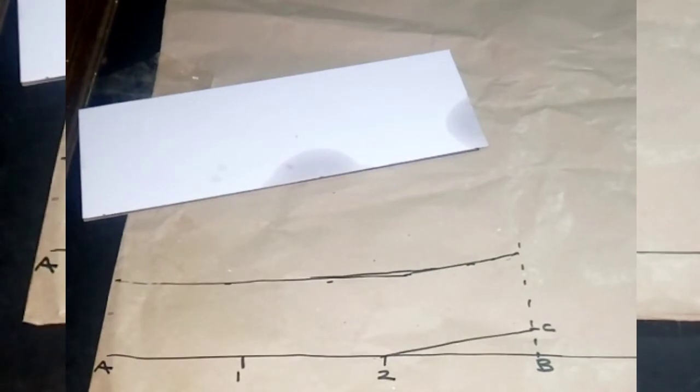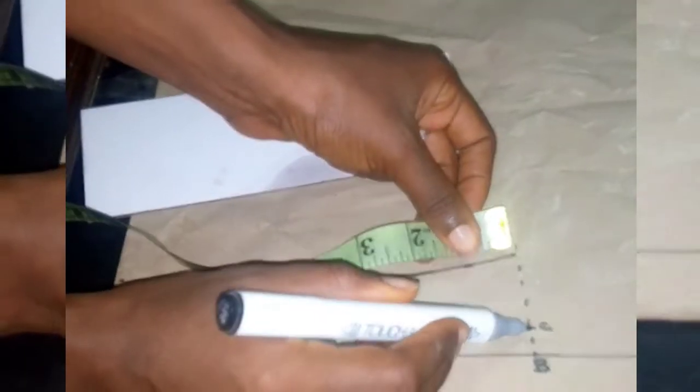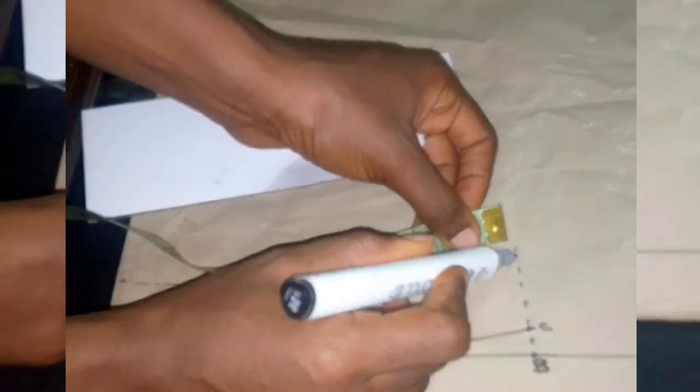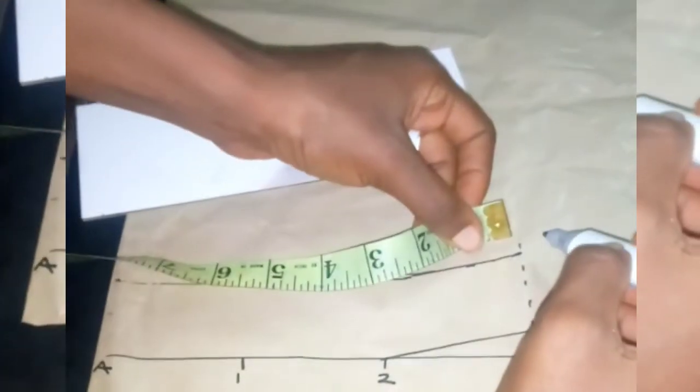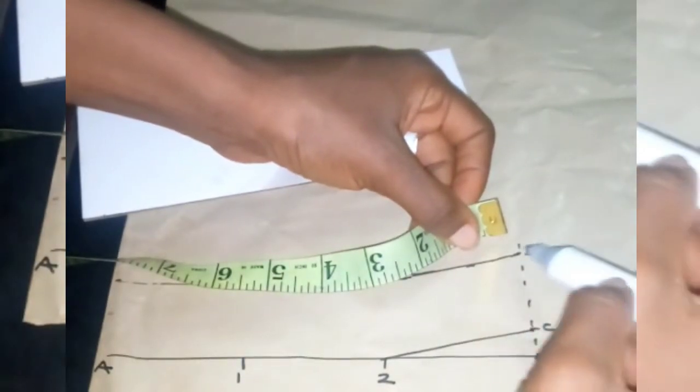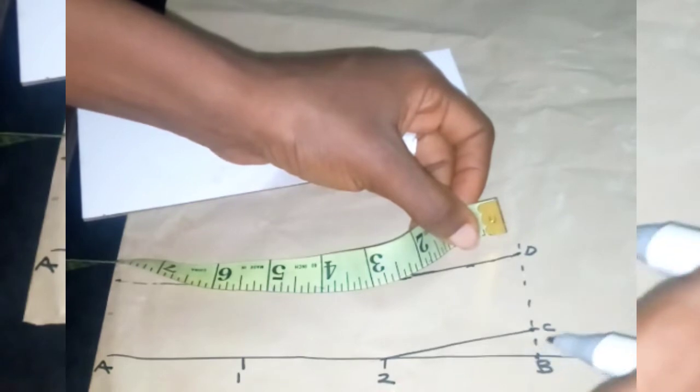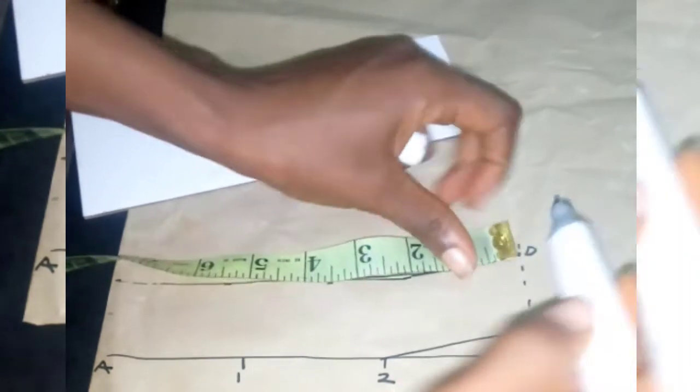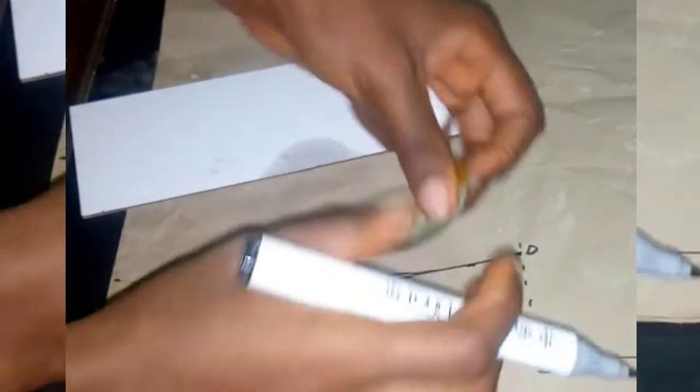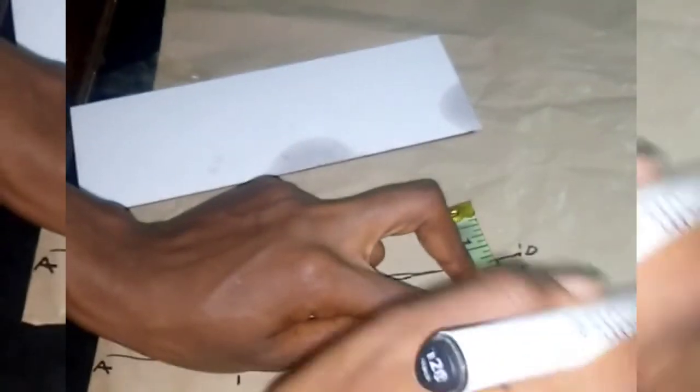After that, from point C to B, you transfer the measurement. From that point where you input the dot, from point C to B will be the same as D to that point. You measure 0.5 inches, then you connect it to line C.